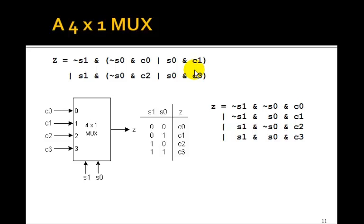And we can now multiply it out. z is not s1 and not s0 and c0 or not s1 and s0 and c1 or s1 and not s0 and c2 or s1 and s0 and c3. So this is the equation for z for a 4 to 1 mux.